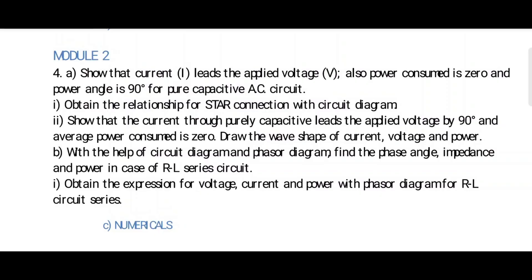In Module 2, RL and RC circuits are the most important questions — you need to read these. In either RL or RC, one question will definitely come in tomorrow's exam. For AC current — purely capacitive — from these two questions, one question in part A and one question in part B will come. That's 2 × 7 = 14 marks. And numericals are 6 marks — I will upload a separate video for that.